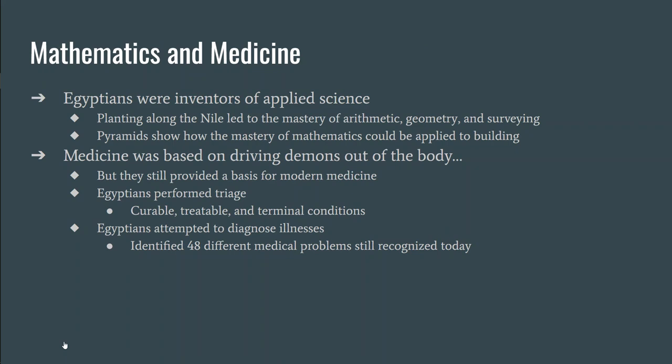The Egyptians are known for their math and medicine — they are one of the first people to use applied science. They had to master geometry, arithmetic, and surveying to control the floodwaters of the Nile and irrigate all the land. Plus the pyramids — that's them putting applied science and math into building. The base of a pyramid is a perfect square and the angle is perfect so that it will neither fall in on itself nor fall out on itself — an impressive feat of architecture.